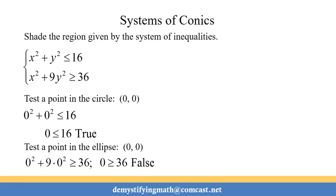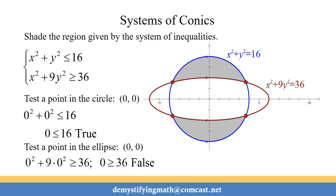which indicates that we need to shade outside the ellipse. So in this system, we want to have both be true. So we want to shade inside the circle, but outside the ellipse. So that would be your shaded region for this particular example.